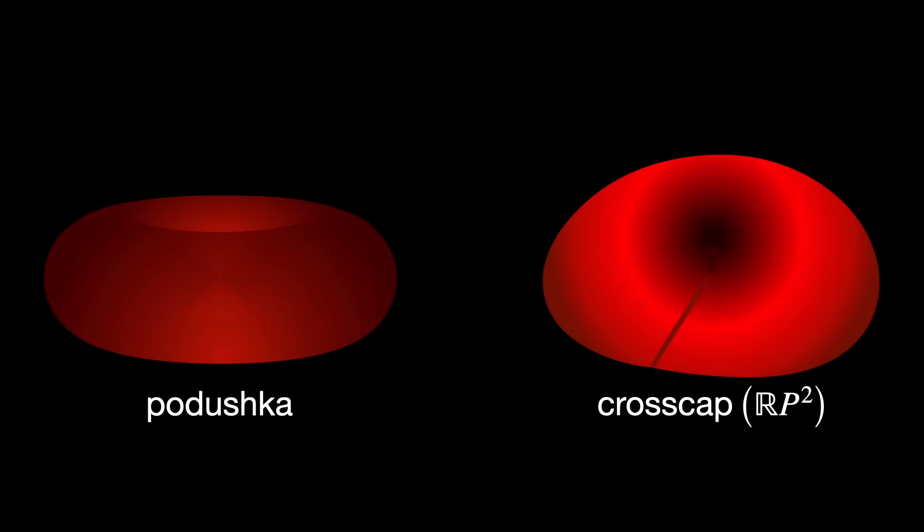The cross-cap embedding of the real projective plane looks really similar to the Padushka surface. But I don't think they are topologically the same. In order to decide whether they are topologically equivalent or not, we need to add rigor to the discussion. And this can be best achieved in this context by talking about some specific topological invariants.